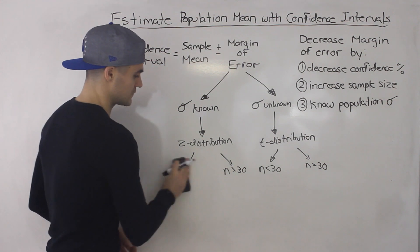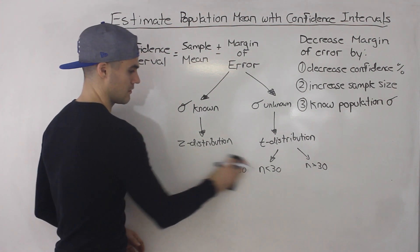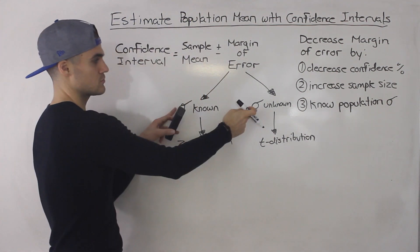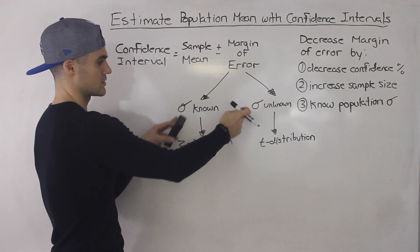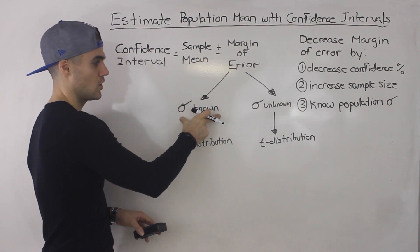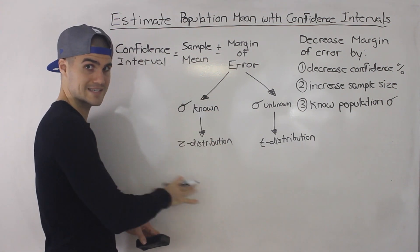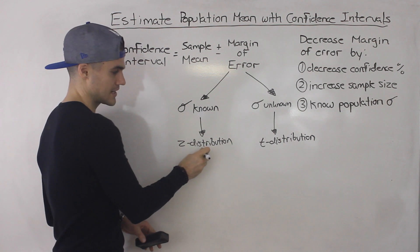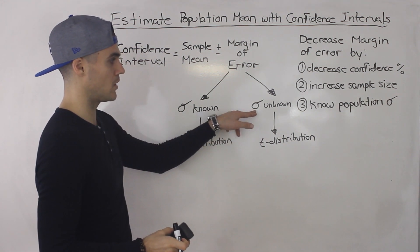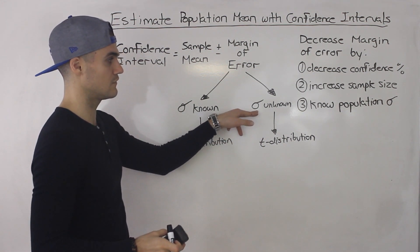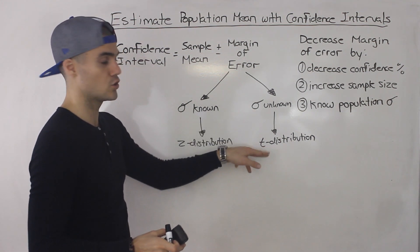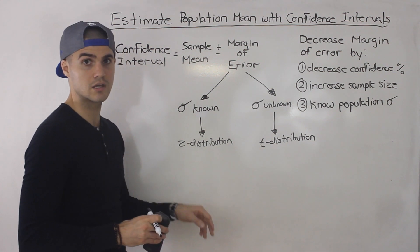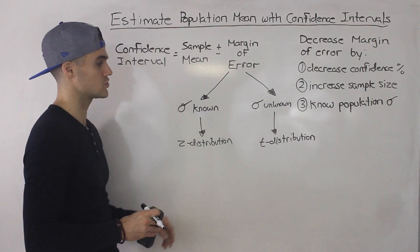For this video, I'm going to focus on just two parameters: if the population standard deviation is known, no matter what the sample size is, we use the Z distribution. And if the population standard deviation is unknown, no matter what the sample size is, we use the T distribution.